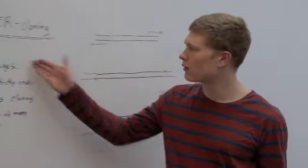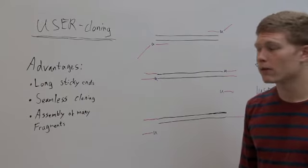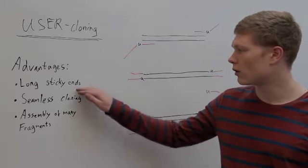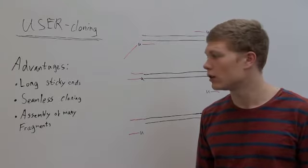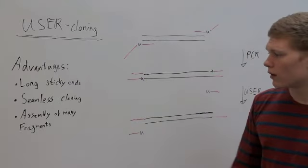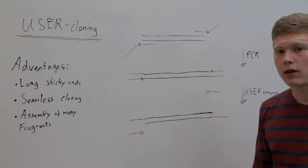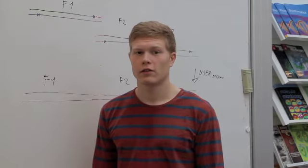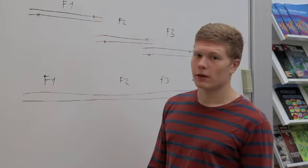The advantages of USER cloning compared to restriction cloning is that you can get very long sticky ends and you can also vary the sequence of these sticky ends. This enables you to assemble many fragments and you can even use it to make seamless cloning. The advantages when using USER cloning is that you can assemble multiple fragments.